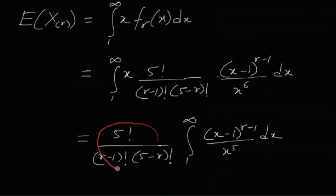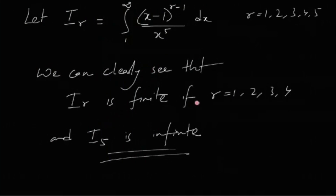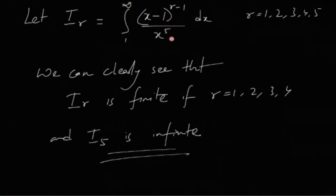Let I_r denote this integral from 1 to infinity of (x−1)^(r−1) / x^5 dx, for r = 1, 2, 3, 4, 5. We can clearly see that I_r is finite if r is 1, 2, 3, or 4. For r = 1, I₁ = integral from 1 to infinity of 1/x^5 dx, since (x−1)^0 = 1. This is clearly finite, and the same holds for r = 2, 3, and 4.